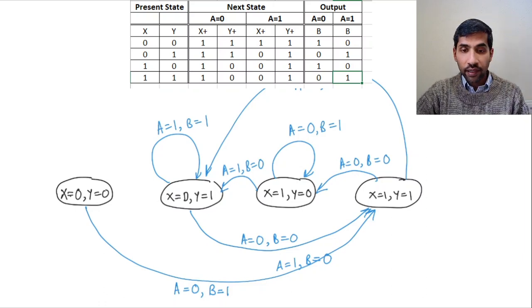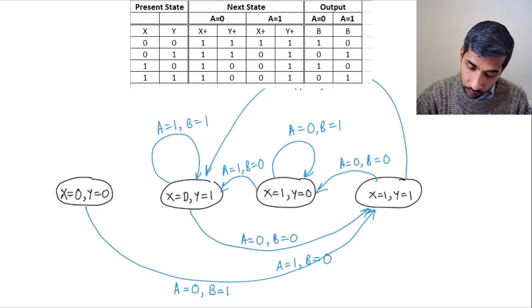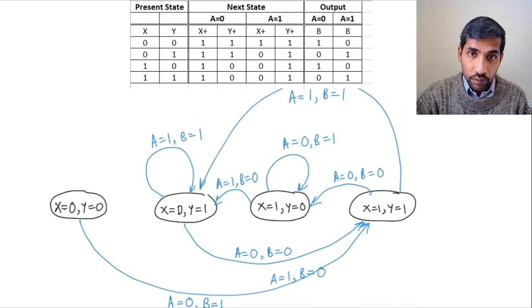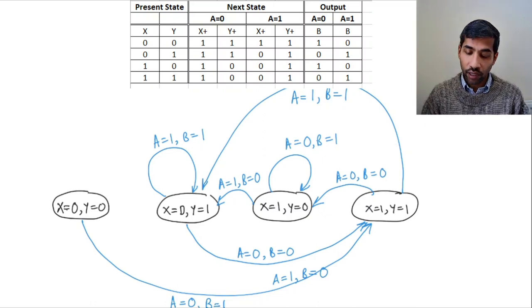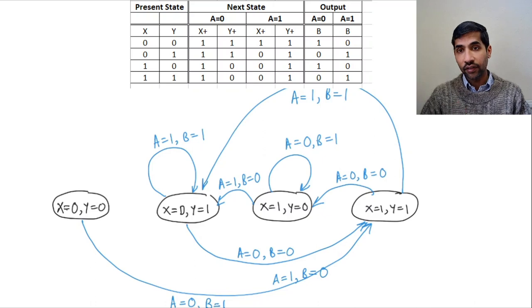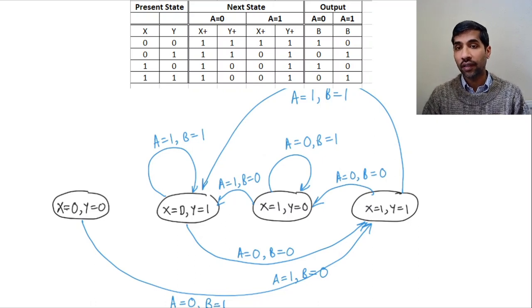So that diagram kind of summarizes it. This is the state diagram that we have for our circuit. It tells you how you go from one state to the other, and what are the outputs that you get for corresponding inputs — it gives you all the information that you know about this circuit.